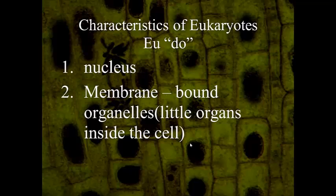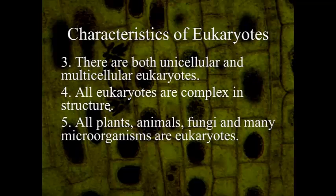The other type is the eukaryotic cell, which does have a true nucleus — a dense area in the middle of the cell. Looking at the back picture, that dense region would be the nucleus. Eukaryotic cells have membrane-bound organelles, which are the organs inside the cell that have a membrane around them. Eukaryotic cells can be both unicellular and multicellular. They are complex in structure, with more pieces involved. Plants, animals, fungi, and microorganisms can all be considered eukaryotic.